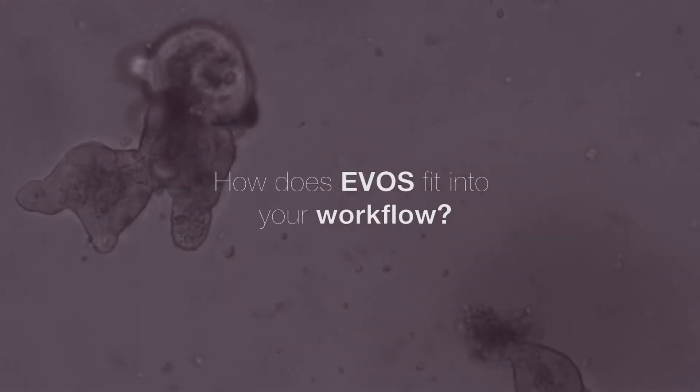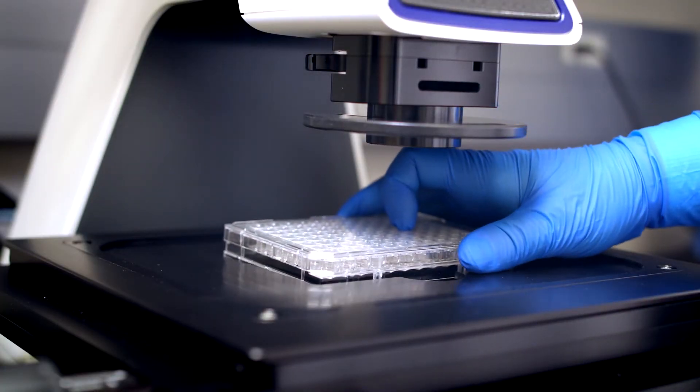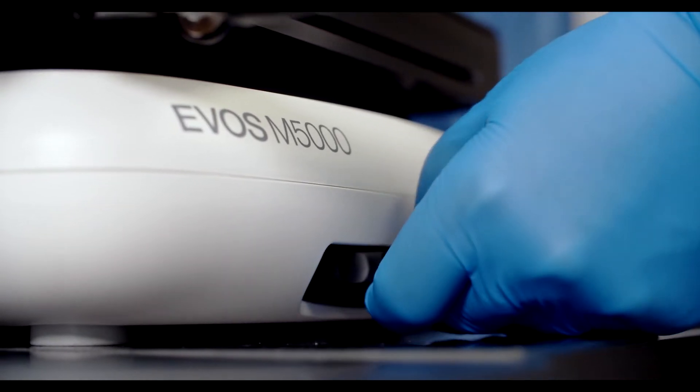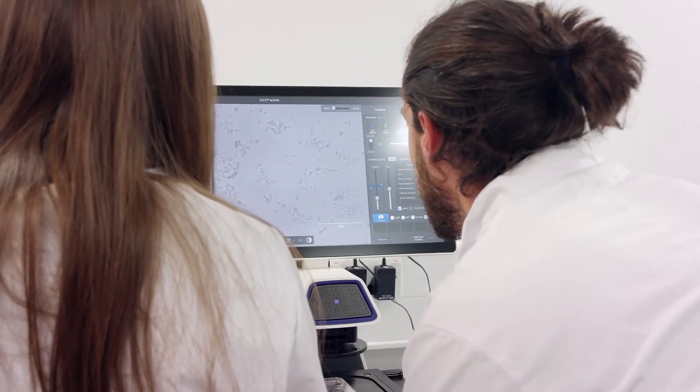So it is sitting in our tissue culture and it's being used as the main instrument there for checking on your cells, for counting your cells, also when you do passaging and so on, but also checking on fluorescent levels. Basically if you have a reporter line that expresses X, Y, Z as a protein, you can always check with the EVOS quite quickly.